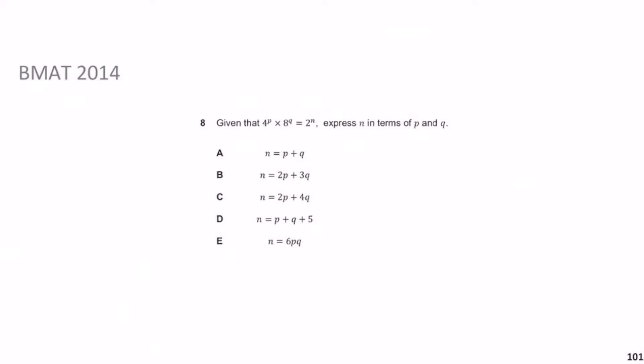Let's go through this. We need to write 4 and 8 as powers of 2, making everything the same base so we can use the laws of indices. So 4 can be written as 2 squared to the p, and 8 can be written as 2 cubed to the q, equals 2 to the n. Using the law of indices — a power to a power — you multiply the exponents, giving 2 to the 2p.